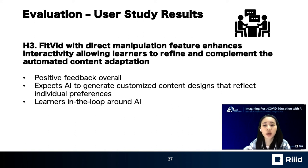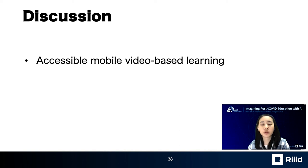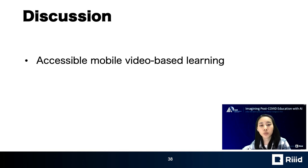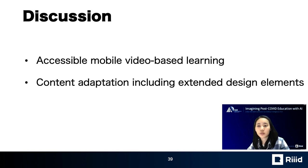Lastly, I want to discuss possible applications and extensions of our work. First, Fitbit can be applied to accessible mobile video learning — while there are web accessibility evaluation and support tools, current technologies lack support for accessible video content for people with low vision or dyslexia, and Fitbit can be extended to support such accessibility needs. Secondly, we can extend the scope of content adaptation to images and layouts, since we currently focus on text elements. Image content detection or layout optimization algorithms can be applied to our current work for more comprehensive adaptation. Please refer to the paper for more details. Thank you.